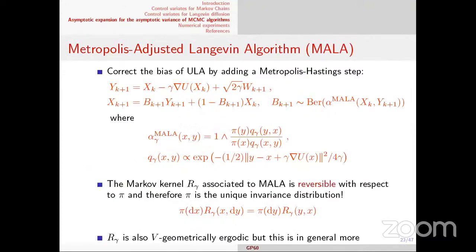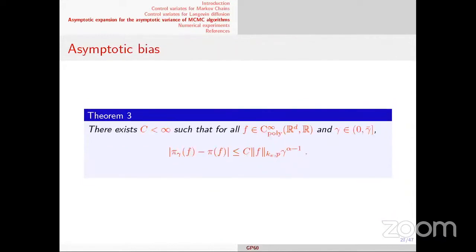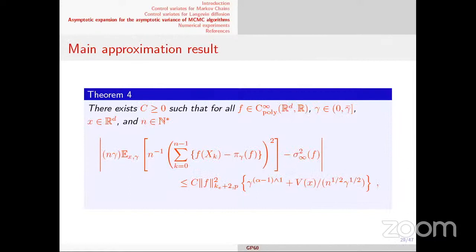So the proofs are somewhat involved but not super difficult. As a one-dimensional example, take a mixture of two Gaussians — one centered at minus one, one at plus one — with variance one-half, and a test function. In dimension one you can integrate explicitly and compute the Poisson equation. The Poisson equation solution is proportional to 1/pi(x), which blows up at zero for a bimodal distribution, showing the Poisson solution can be quite wild. Then you apply control variates.